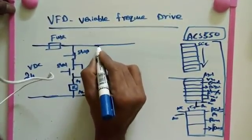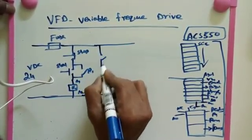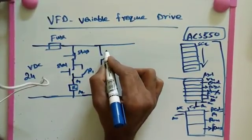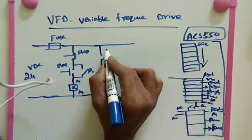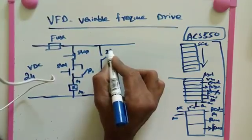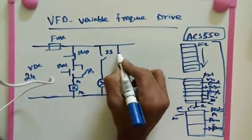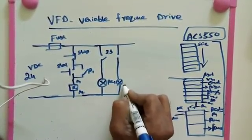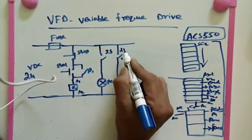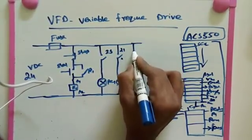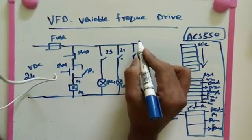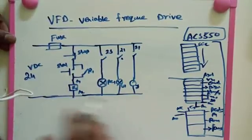After that, we add indication lamps. For run indication, we use a red lamp connected to terminal 23 on the VFD. For ready indication, we use a green lamp connected to terminal 21. For fault indication, we use a yellow lamp connected to terminal 27 on the VFD. These give us the first set of indications along with the start-stop command.